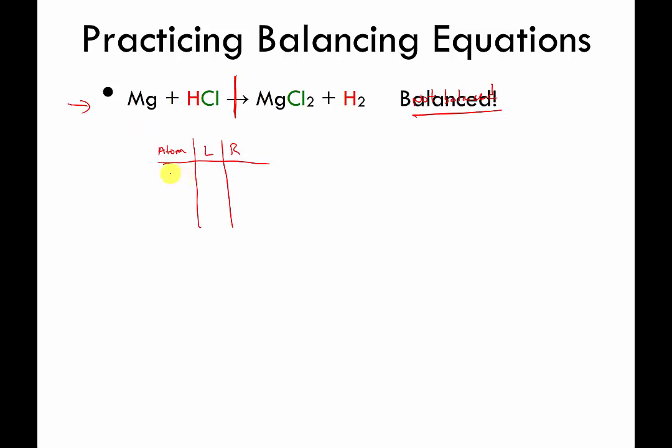So what I do is I just go atom by atom. In this case I would start with Mg for magnesium, and I ask the question: how many magnesiums on the left side of the arrow? Well, let's put the numbers that are implied to be in front here just for clarity. There's one magnesium on the left. How many magnesiums on the right? Well, there's one magnesium as well. So magnesiums are balanced.